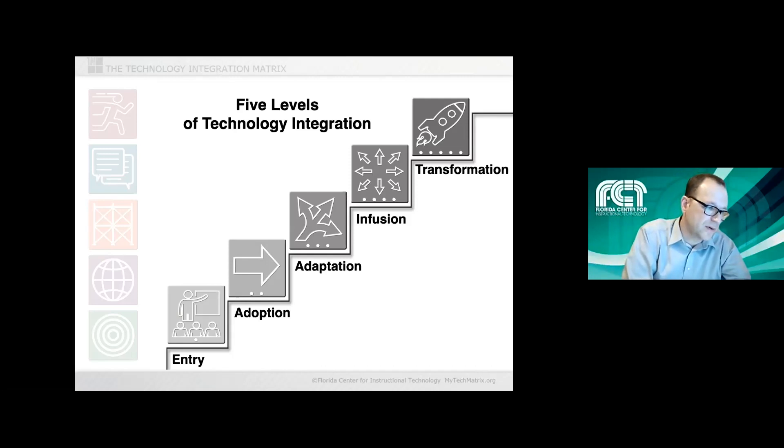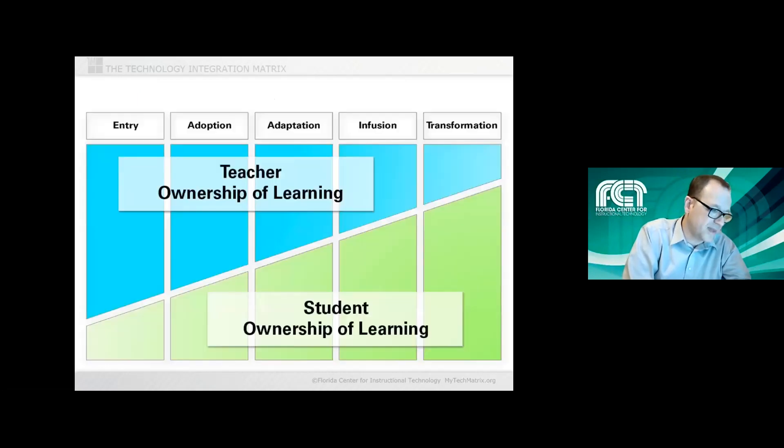So those five levels and those five characteristics give us the basis for the TIM. And I'll just talk briefly about some of the underlying characteristics that we see across those levels.